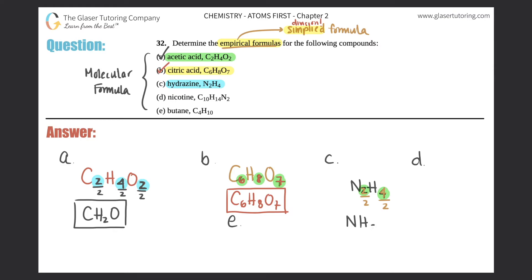Next one: nicotine, C10H14N2. Nicotine is the compound from the tobacco plant, which is the addictive substance in cigarettes. When people are addicted to cigarettes, they're addicted to the nicotine, the compound C10H14N2.